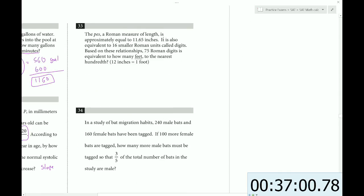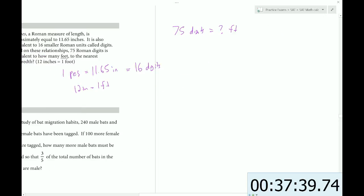The pes, a Roman measure of length, is approximately equal to 11.65 inches. So one pes is 11.65 inches. It is also equivalent to 16 Roman units called digits. So it's also 16 digits. Based on these relationships, 75 digits is equivalent to how many feet? We also know that 12 inches equals 1 foot. So we have the problem laid out here. So we have to convert digits into feet.